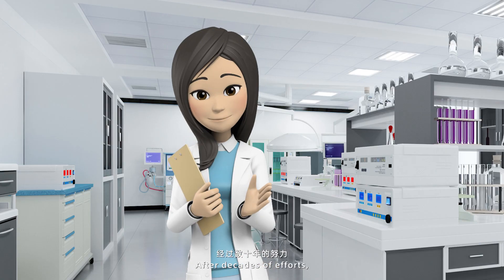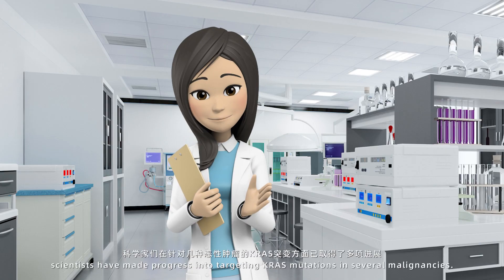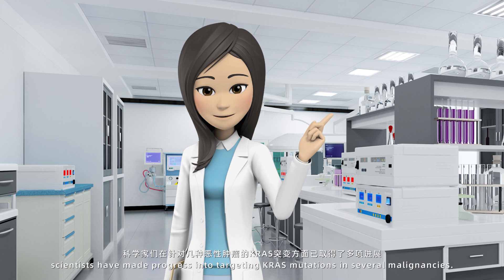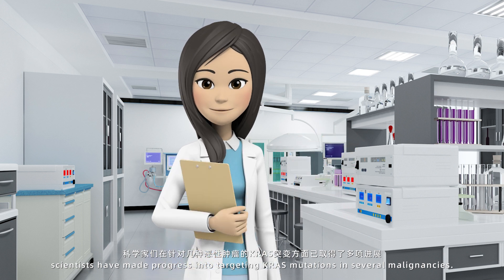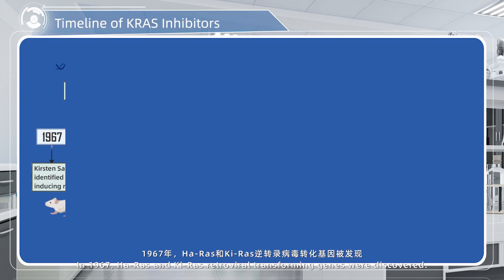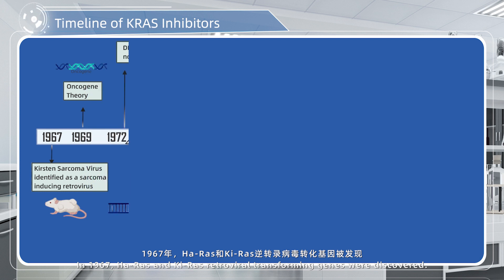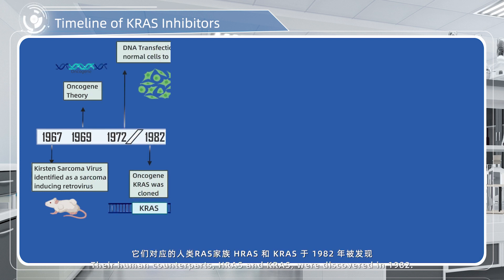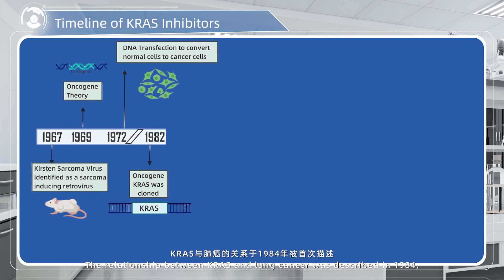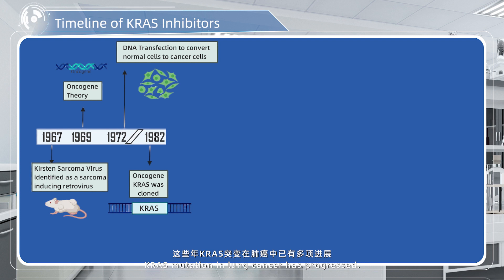After decades of efforts, scientists have made progress into targeting KRAS mutations in several malignancies. In 1967, HARAS and KRAS retroviral transforming genes were discovered. Their human counterparts, HRAS and KRAS, were discovered in 1982. The relationship between KRAS and lung cancer was described in 1984, and KRAS mutation in lung cancer has since progressed as a research focus.